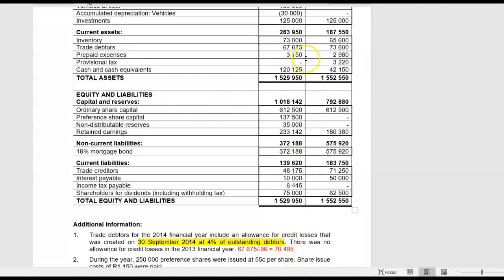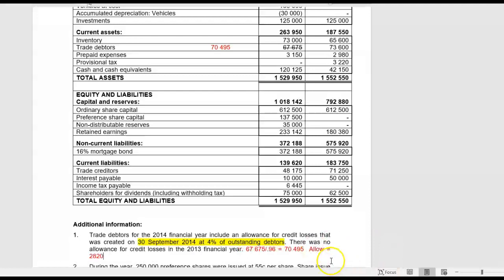That 74,000 is the figure that we want to compare with the trade debtors of 73,600 from last year — so no longer do we compare the 67,675, because that does not represent the actual gross debtors. I'm going to write 74,000 as the actual closing balance of our trade debtors. Now the allowance was then equal to an amount of 2,820. Why is that important? What is our accounting entry when we pass an allowance for credit losses?